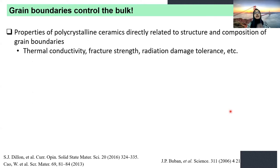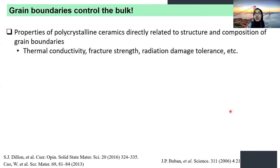It is well known in the scientific community that grain boundaries basically control the bulk properties, and the structure and composition of grain boundaries will directly impact the final properties of the resulting material. For instance, if you have grain boundary segregation present at the interface, it can reduce phonon propagation and can directly affect the thermal conductivity. Similarly, any presence of grain boundary segregation at the interfaces would also change the fracture properties. There are many other properties that have been explored in terms of their relationship to grain boundary chemistry.